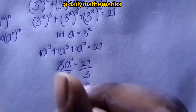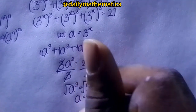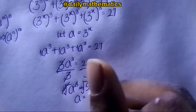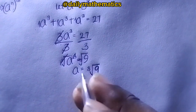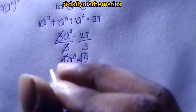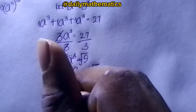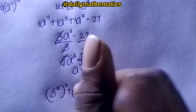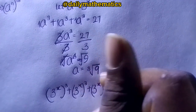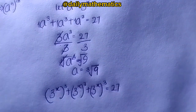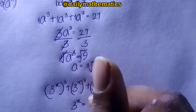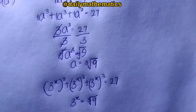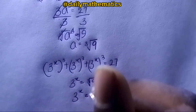To solve for a, we take the cube root of both sides: a equals the cube root of 9. Now recall that a equals 3 raised to the power of x, so 3^x equals the cube root of 9. The cube root of 9 is the same as 9 raised to the power of one-third.